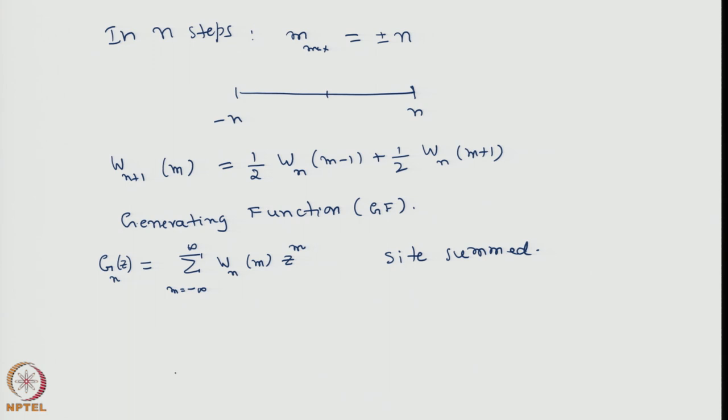z is just a number, can be a complex number, its domain will depend upon the convergence. So we will leave it at the moment undetermined, only thing we should remember that it should exist, this operation generating function should be defined at least over a narrow strip of z, some space that is sufficient. So once we have this definition, we can multiply the random walk equation here by z to the power m, we can multiply this equation throughout by z to the power m and then do the summing process. So then we arrive at, from this equation, it is going to be sigma z to the power m W_{n+1}(m), m equal to minus infinity to infinity.